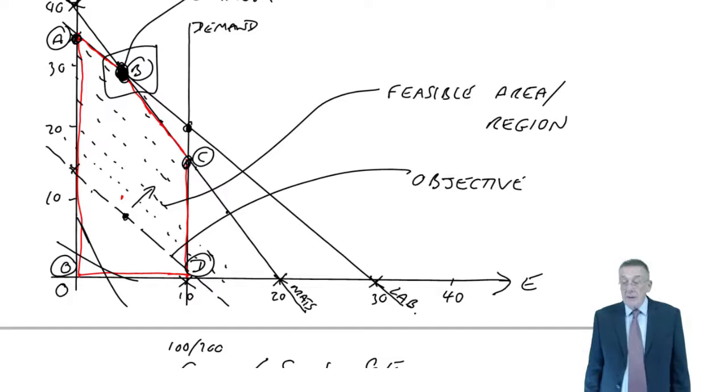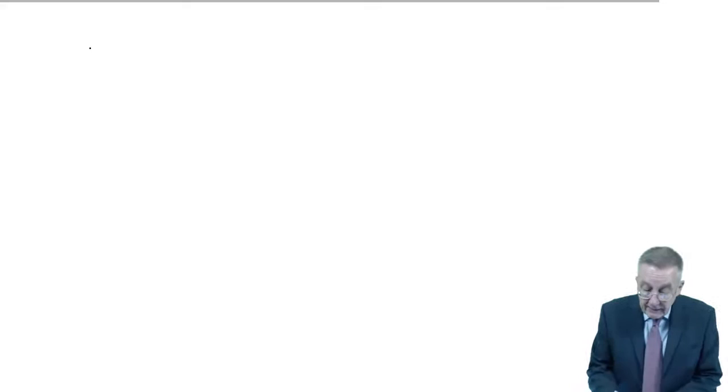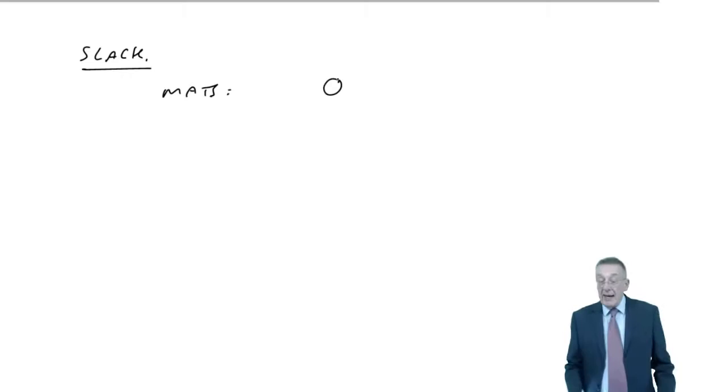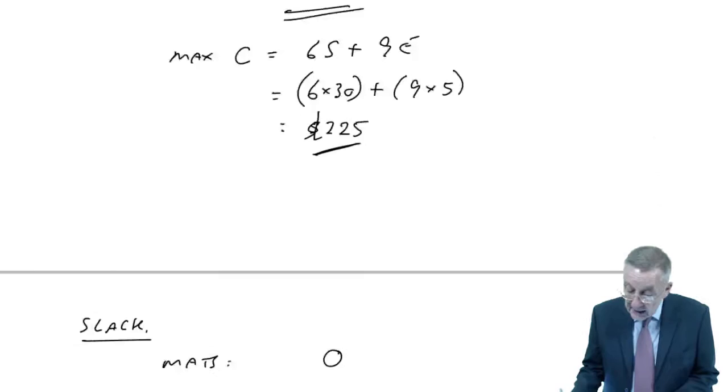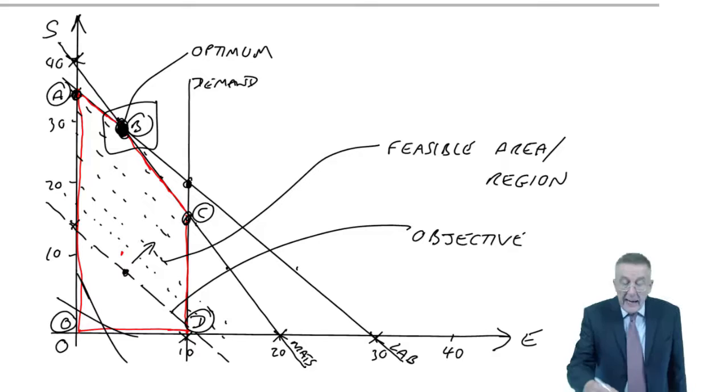Are we using all the materials available at point B? Yes, we are. How do I know? Because we're on the materials line. If we're on the materials line, we are using all 80 kilos. So for materials, the slack is zero.